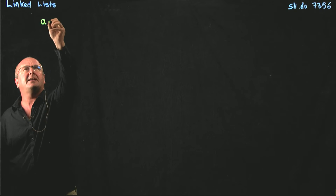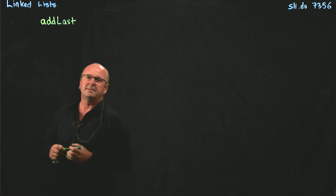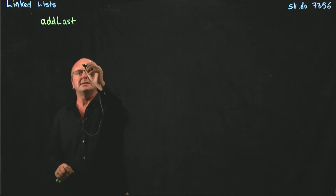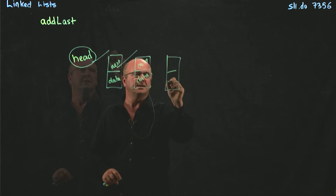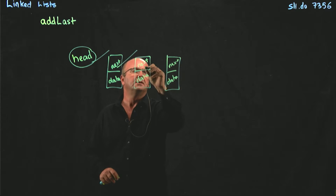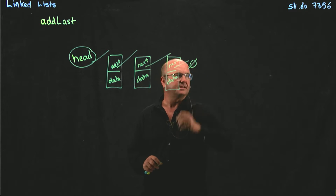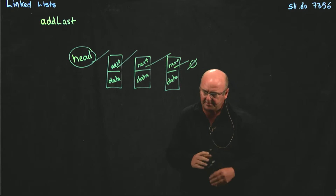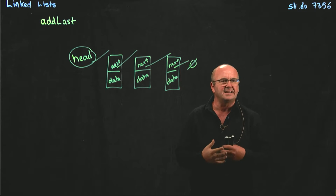Let's take a look at adding at the end of a linked list. We're going to start off with a list with three nodes, just because we want to look at adding to the end. So how are we going to add to the end of the list?